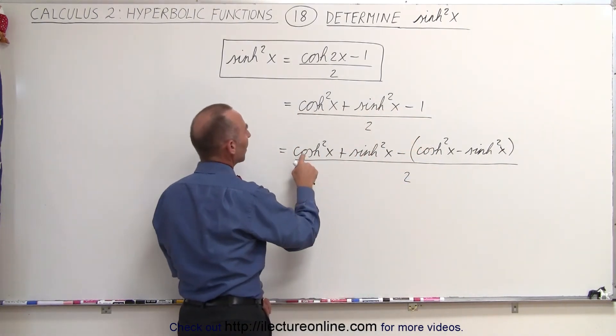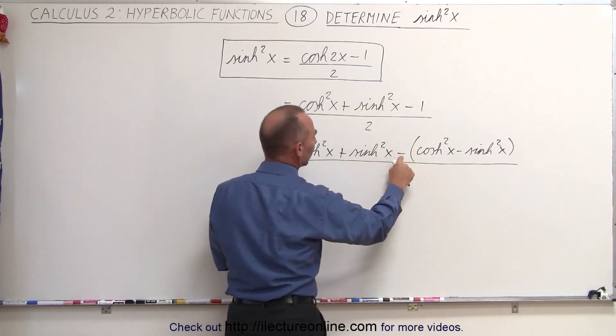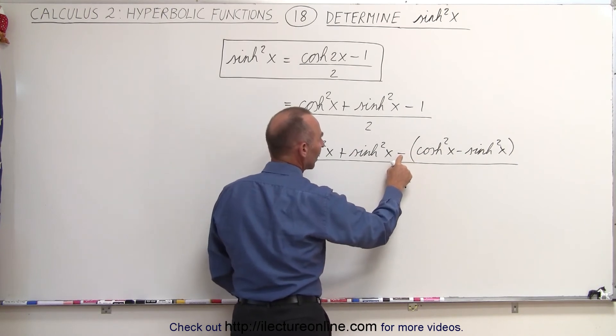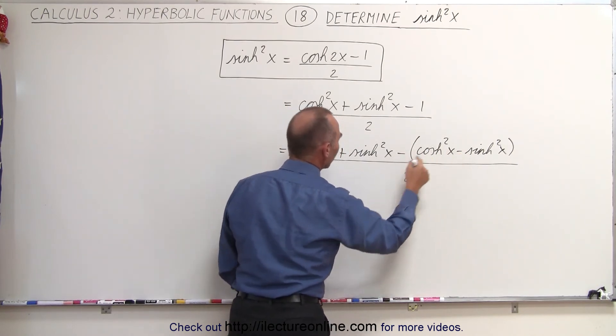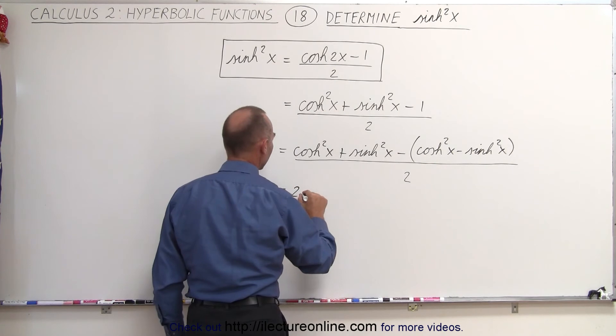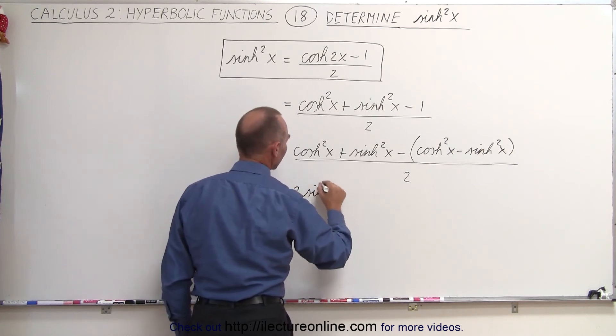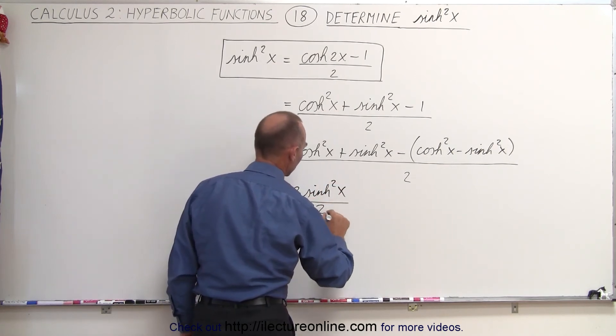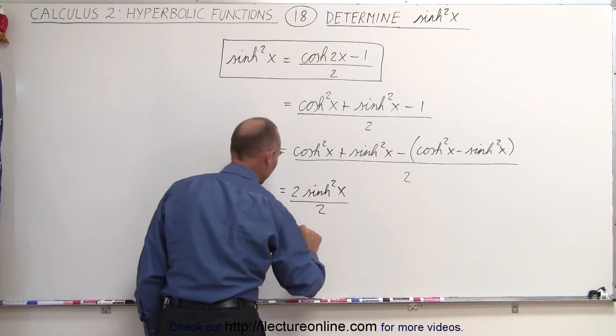Now you can see that the hyperbolic cosine squared of x will cancel out because of the negative sign, and this negative will turn this into a positive, so this becomes equal to twice the hyperbolic sine squared of x divided by 2. And then of course when we cancel out the 2's,